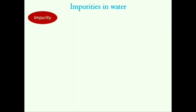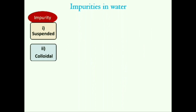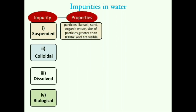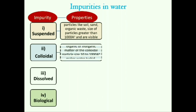Various types of impurities present in water are categorized mainly as suspended, colloidal, dissolved, and biological impurities. Suspended impurities are of larger particle size, between 10 to 1000 nm, and these are visible. Colloidal particles are of 10 to 1000 nm, which makes water turbid.